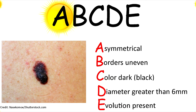A represents asymmetrical. To determine this, you would draw a line down the middle of the area and see if it looks the same on each side. If we did that here, it would not look the same on each side, so this area is definitely asymmetrical.